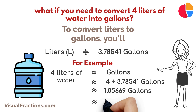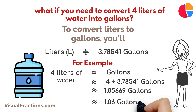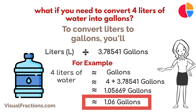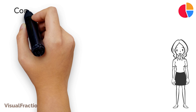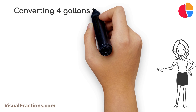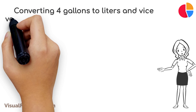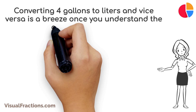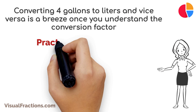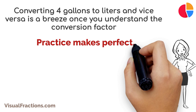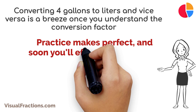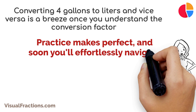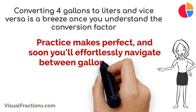Remember, rounding to the nearest hundredth gives us approximately 1.06 gallons. And there you have it — converting four gallons to liters and vice versa is a breeze once you understand the conversion factor. Practice makes perfect, and soon you'll effortlessly navigate between gallons and liters.